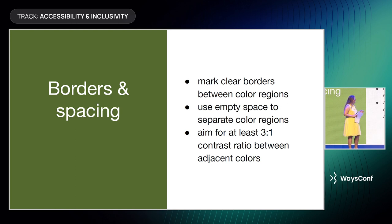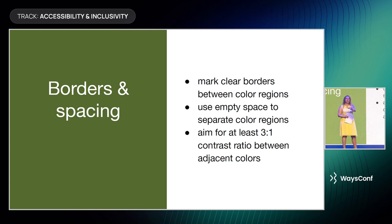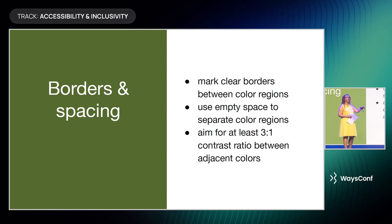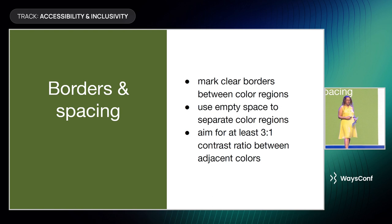Key insights for borders and spacing: use borders, use spacing to your advantage — spacing makes it far easier for both visually and cognitively impaired people to distinguish where one sector ends and another begins. Also remember to keep contrast ratio between adjacent colors; getting contrast between all colors in a palette is nearly impossible, but between adjacent ones it makes everything much easier to work with.